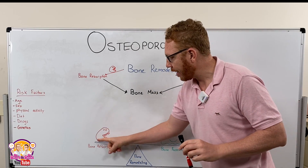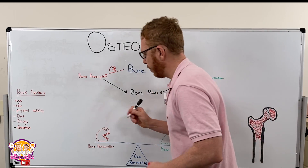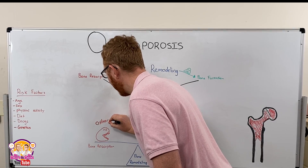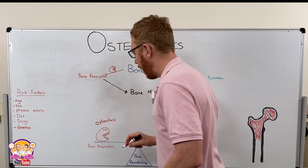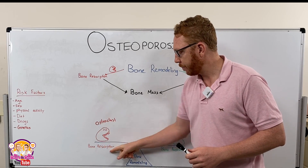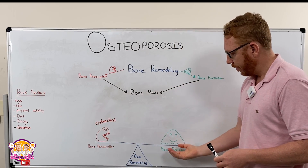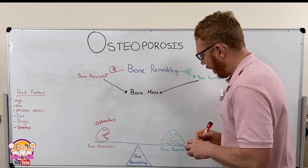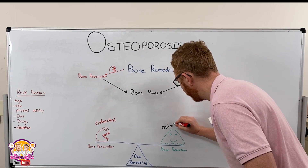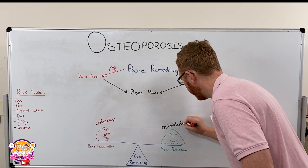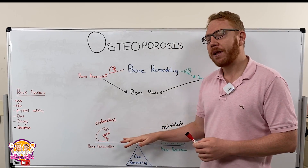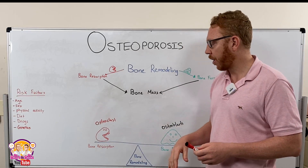Remodeling is a balancing act between taking bone away — called bone reabsorption — and adding new bone. The cells that take bone away are osteoclasts, which eat away and reabsorb bone, whereas the cells that add new bone are known as osteoblasts.